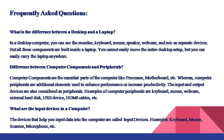What is the difference between computer components and peripherals? Computer components are the essential parts of the computer like processor, motherboard, etc. Whereas computer peripherals are additional elements used to enhance performance or increase productivity. The input and output devices are also considered as peripherals.